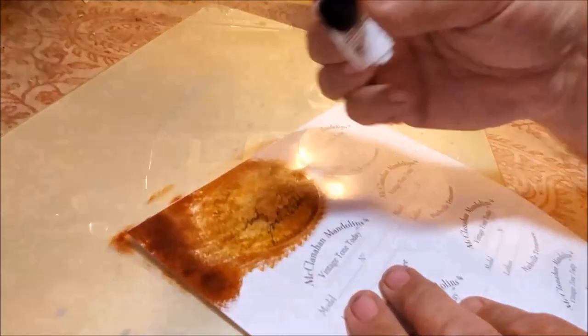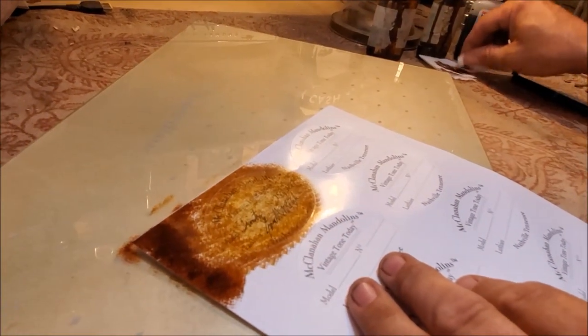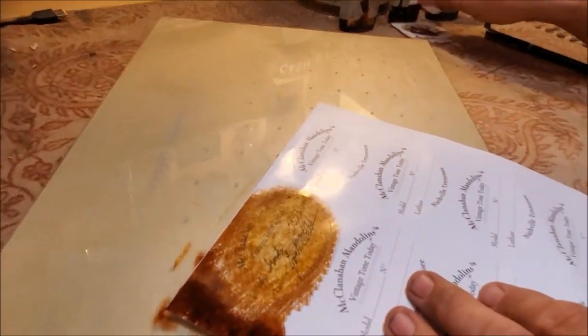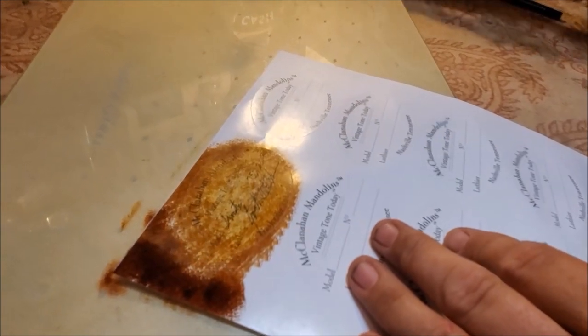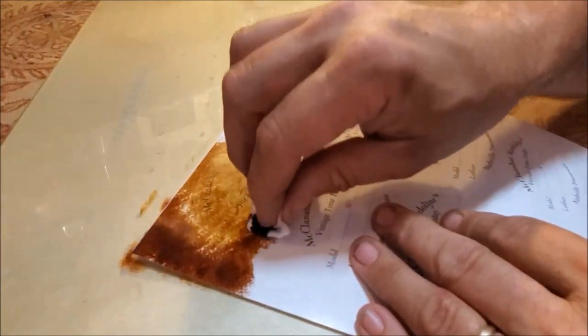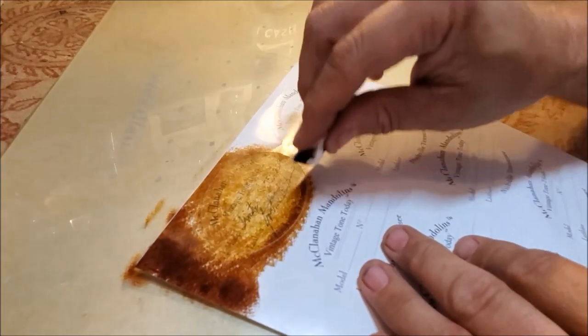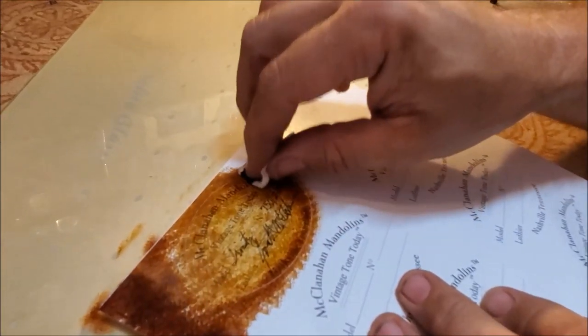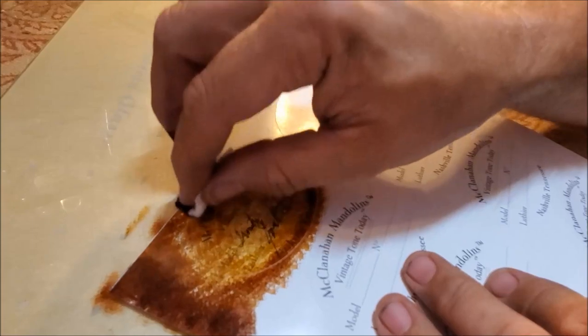Now at this point, because my lettering is black, I want to make sure and not get too dark. So I want to tap a little bit extra to make sure that any of that liquefied residue of the stain is gone. It's almost like a dry application.